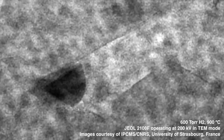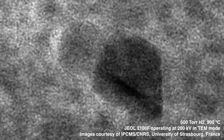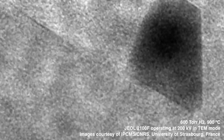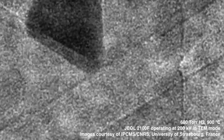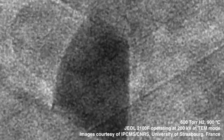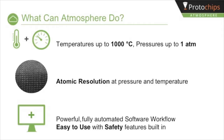Welcome to a brief overview of the Atmosphere Environmental Gas Cell for In-Situ Electron Microscopy. Atmosphere revolutionizes electron microscopy by providing nearly any electron microscope with the capabilities to perform environmental microscopy. It converts your TEM from an atomic resolution vacuum-only instrument into a powerful materials research and development laboratory. Conduct experiments under realistic reaction conditions at temperatures up to 1,000 degrees Celsius and pressures up to 1 atmosphere, with a variety of different gases.